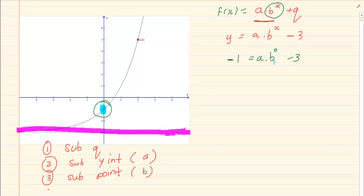Now what does that do exponentially? Exponentially because B is to the power of 0, it becomes 1. So I have minus 1 is equal to A minus 3 and that would mean A is equal to 2.